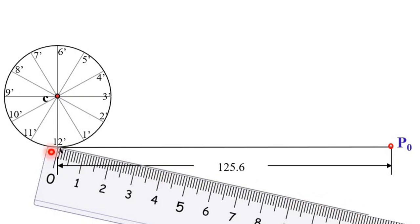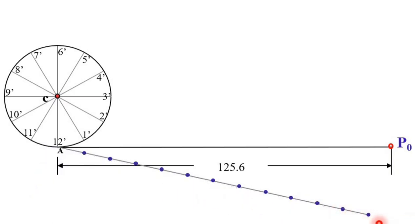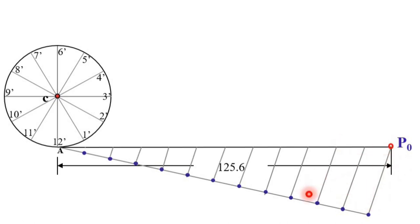First, draw any line inclined to the AP0 line at any random angle, selecting the length such that you can easily divide it into 12 equal parts. Here I have taken 12 mm so I can easily mark 12 equal divisions — 9, 10, 11, and 12. Now join P0 with the end of this line, and with the help of a ruler scale draw all lines parallel to this line passing through each division point. This automatically gives you 12 equal divisions of the AP0 line.